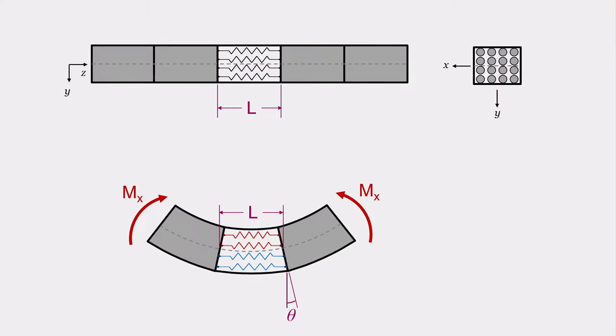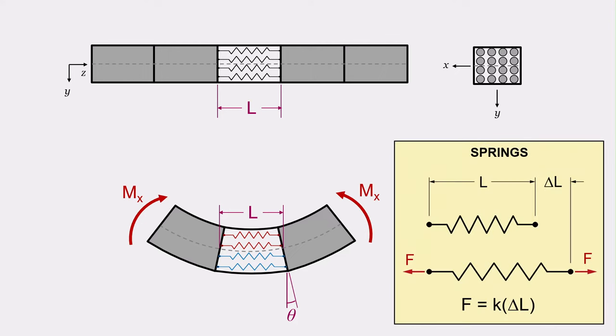We can model the material in this beam as a group of springs. For this particular beam, the cross-section is replaced by four layers of springs through the thickness with four springs in each layer. In the deformed beam, the red springs are in compression while the blue springs are in tension. If you recall from high school physics, the force in a spring is related to its change in length through the spring constant denoted by the letter K. We can use this result to examine how the beam is deforming.